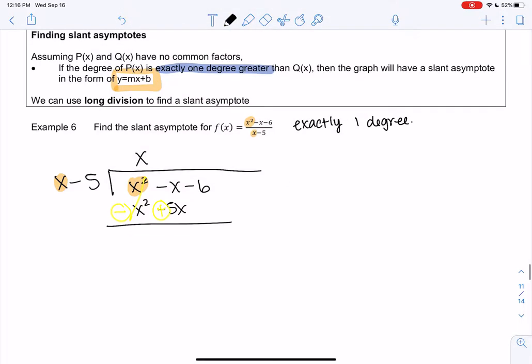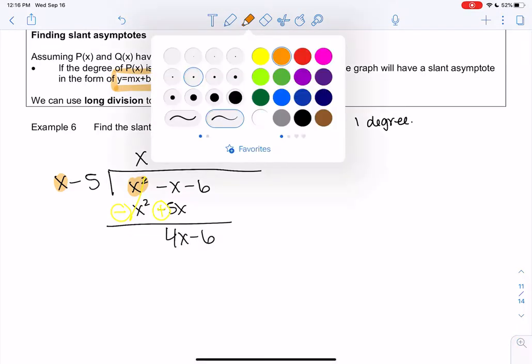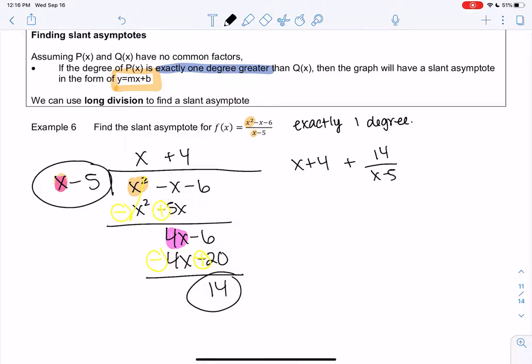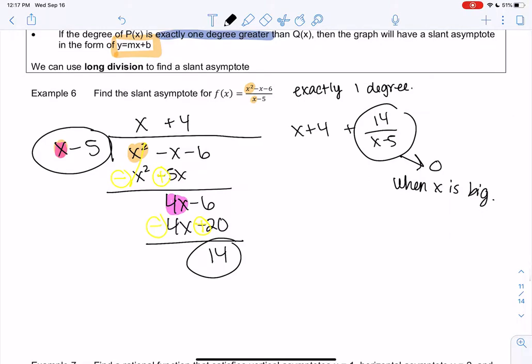We subtract and get 4x minus 6. We'll do 4x divided by x and we get 4. We multiply 4x minus 20, then subtract and get 14. So f(x) would be the same as x plus 4 plus 14 over x minus 5.